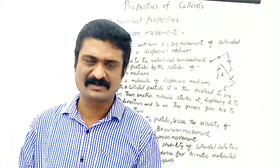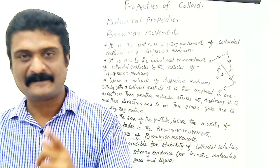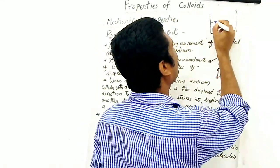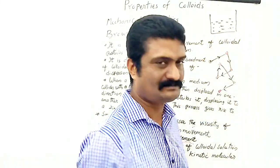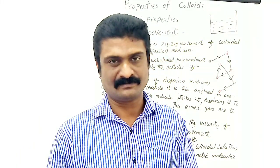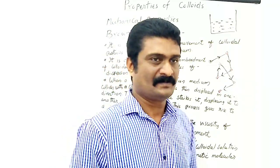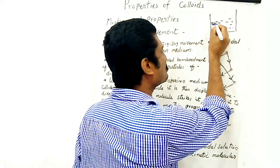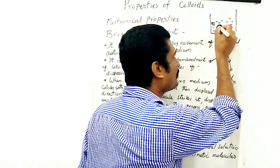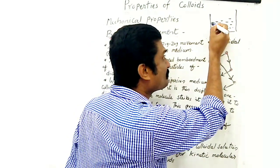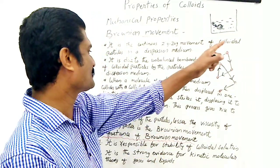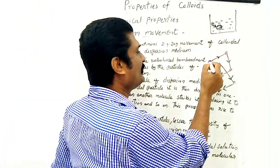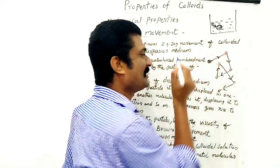What is the cause of Brownian movement? The particles of the dispersion medium are in continuous random motion. When a dispersion medium molecule — suppose this one indicates a colloidal particle — suppose a dispersion medium molecule hits and collides with the colloidal particle, the colloidal particle is displaced in one direction.